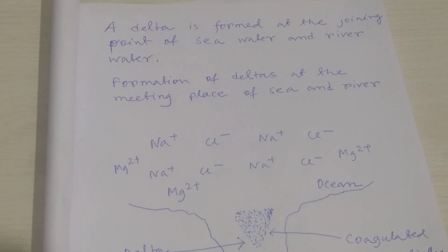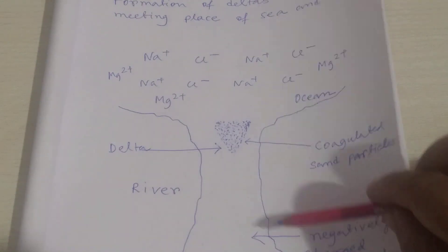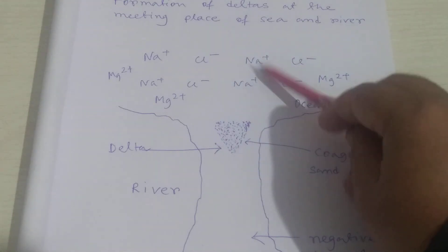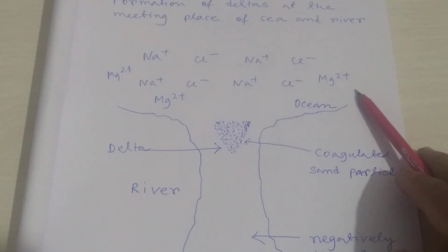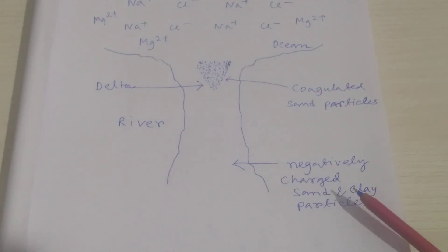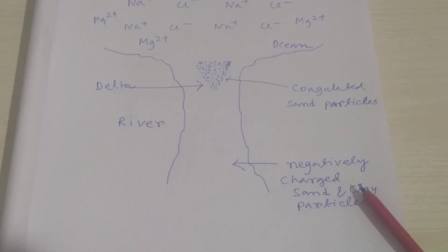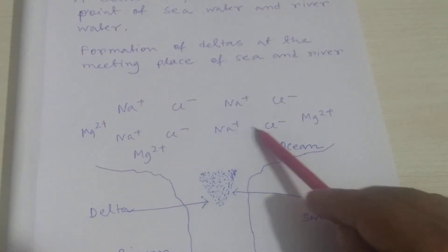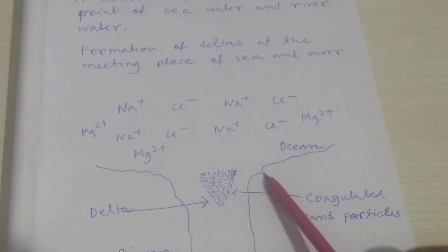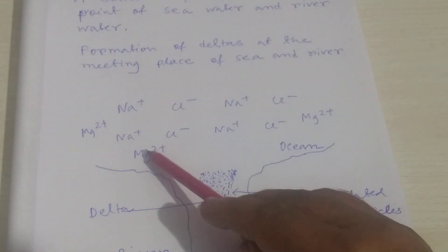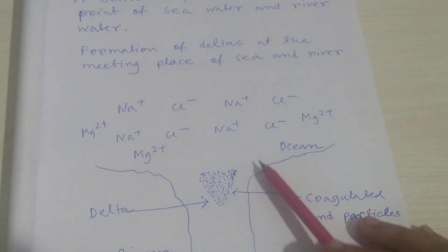To understand this situation clearly, look at this picture where this is the river water flowing and this is seawater — here the sea or ocean is placed, and here it is the river. River water is a negatively charged colloidal solution of sand and clay particles. In seawater or ocean, it contains electrolytes like sodium chloride and magnesium chloride, so cations like Mg²⁺ and Na⁺ are present.